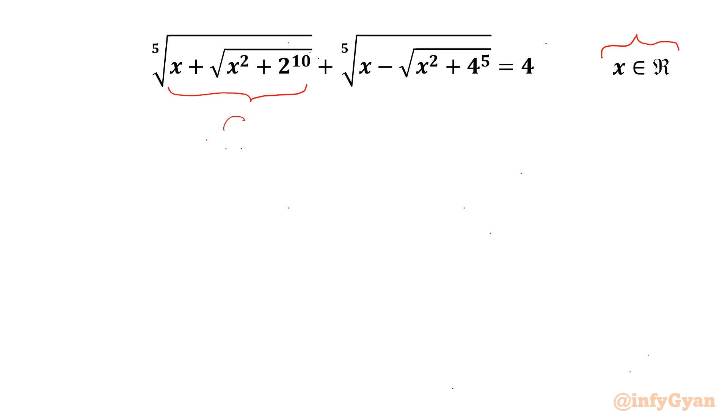I will call first radicand equal to a power 5 and second radicand we will consider b power 5. So the very first equation which I can write after this will be fifth root of a power 5 plus fifth root of b power 5 equal to 4. Now fifth root power 5 will be over. We will get our first equation as a plus b equal to 4.